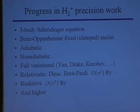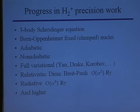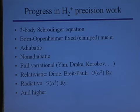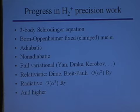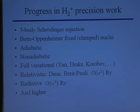But even still, things go on. There are relativistic approaches using the Dirac equation, Breit-Pauli approximation approaches, which are also good for relativity and are accurate to order alpha squared Rydberg, and even further need for radiative corrections, which are being looked at as we speak, in higher terms.